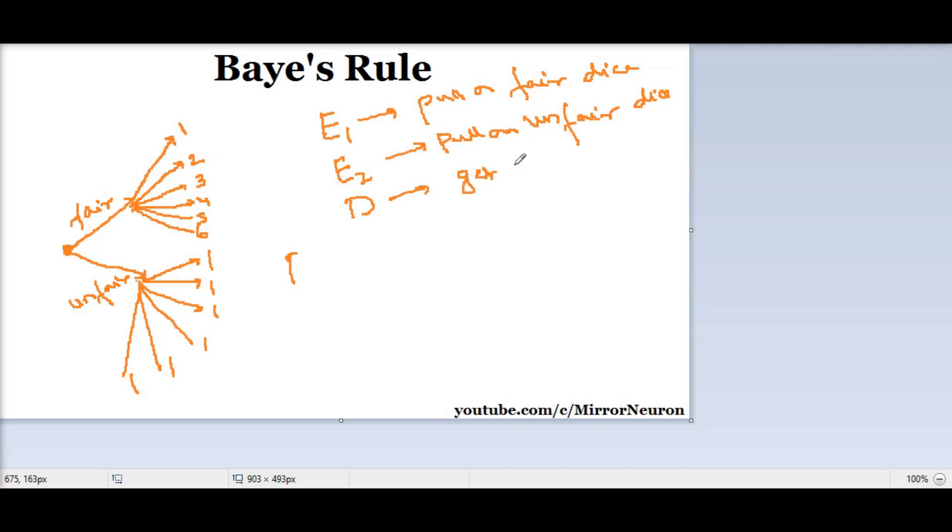We already know we got a one—that's the additional information. So what is the probability of getting E1 given the condition D? If we got a one, how many ways can we get a one? If we roll a fair die, I can get a one. If I roll an unfair die, there are six ways I can get a one. That means 1 plus 6 equals 7 possible ways to get a one.